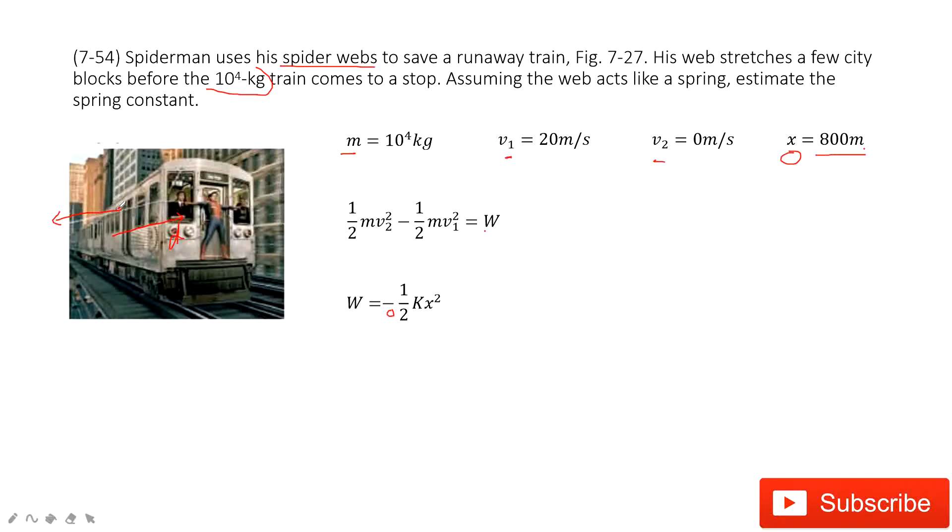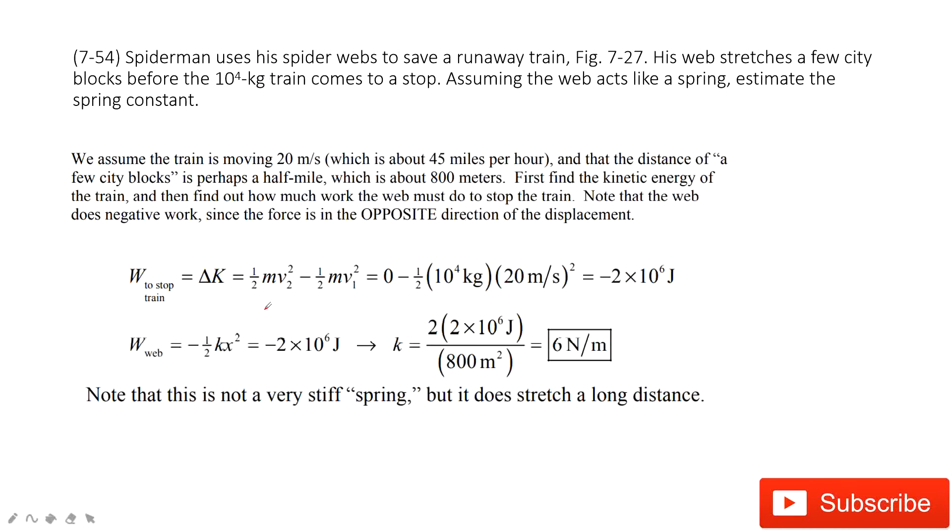The force by the spiderweb is backward. So this is the force, and this is the d. F d cosine 180 degrees gives the negative sign. The magnitude is one half k x squared. The x is given, therefore we can find k. Then we input the numbers.